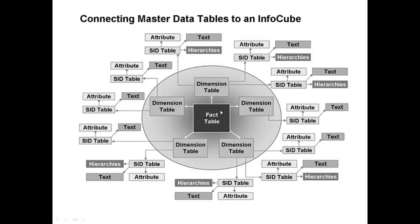The fact table is surrounded by dimension tables, which are connected to SID tables, and SID tables are connected to text tables. The facts in the fact tables are referred to as key figures, and the dimension attributes are known as characteristics. The dimension tables are linked with the central fact table by key relationships. In contrast to the classic star schema, characteristics are not stored in the dimension table. A numerical SID key is generated for each characteristic, and this alias key replaces the characteristic as a component of the dimension table.